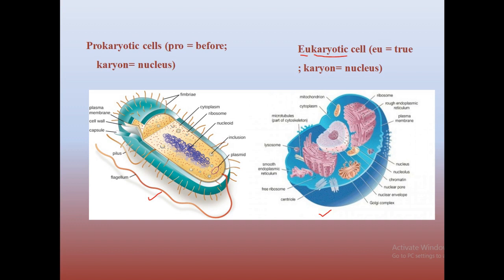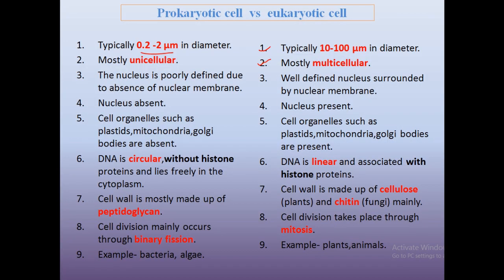The genetic material of the prokaryotic cell is in free flow in the cytoplasmic stream. So in eukaryotic cells there is a proper membrane-bound nucleus, and in prokaryotic cells there is no nucleus — the genetic material is in free flow. Cell organelles such as plastids, mitochondria, and Golgi bodies are absent in prokaryotic cells but present in eukaryotic cells.